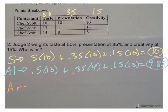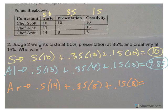And then we go to Chef Aaron, 50% times 14, oops, I got an extra decimal point in there, times 14 plus 35% times 8 plus 15% times 8 gives Chef Aaron a score of 11. So according to Judge 2, Aaron's the winner.